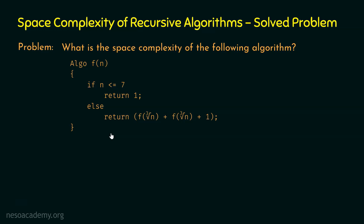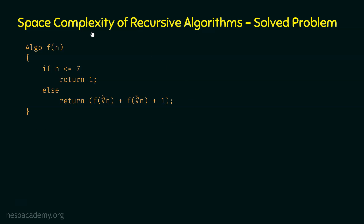Now we will learn how to solve these types of problems. Let's remove this problem statement and create some space. Our focus is entirely on this algorithm. Here we have this function f of n. We are checking if n is less than or equal to 7. If so, we return 1 — this is the base case. In the else block, we are returning f of cube root of n plus f of cube root of n plus 1. We are calling these two functions, forming a recursion — this is the recursive case.